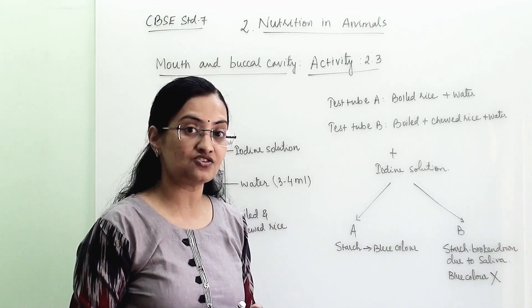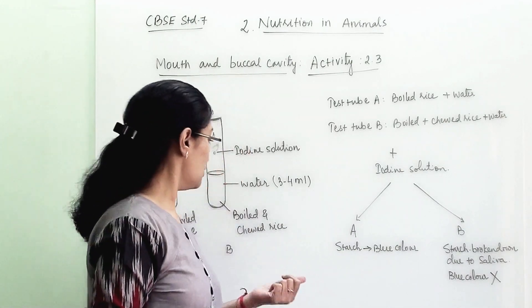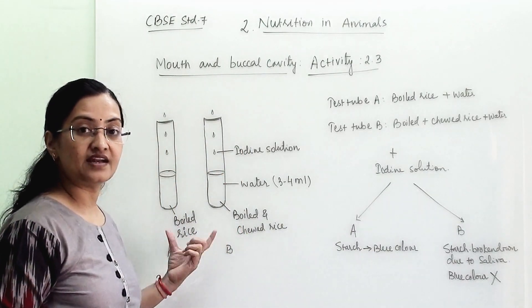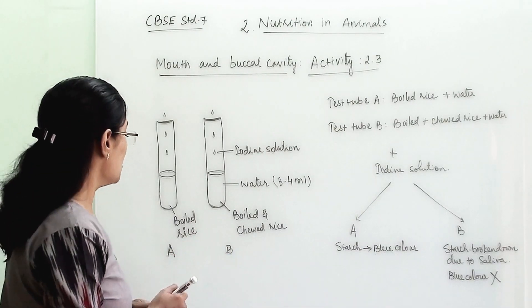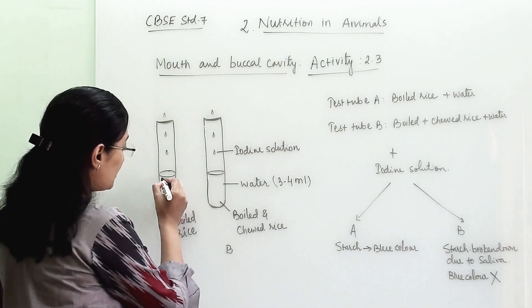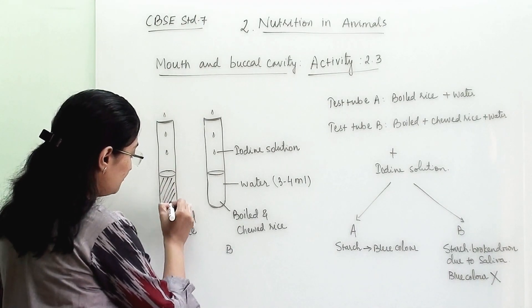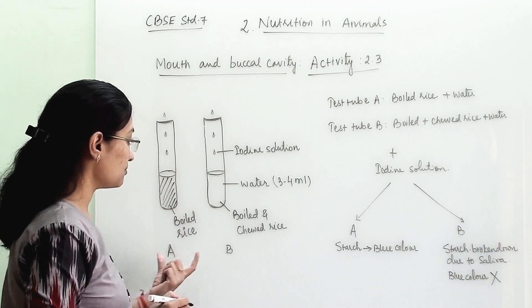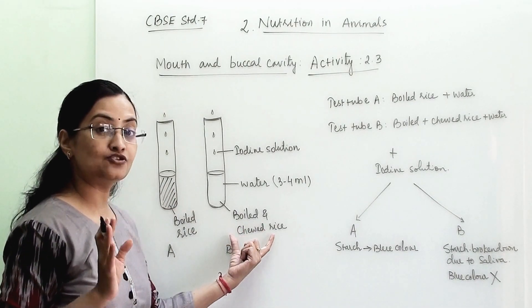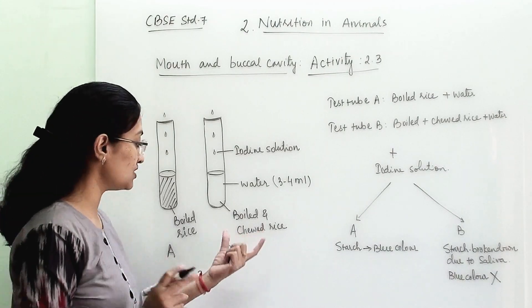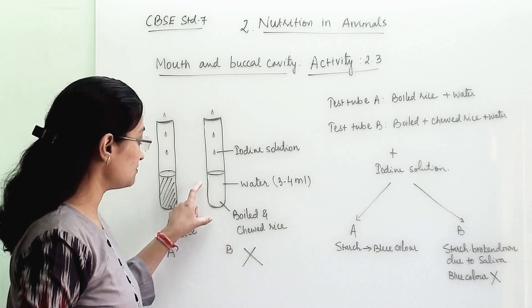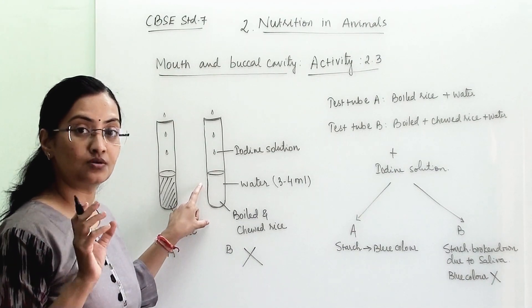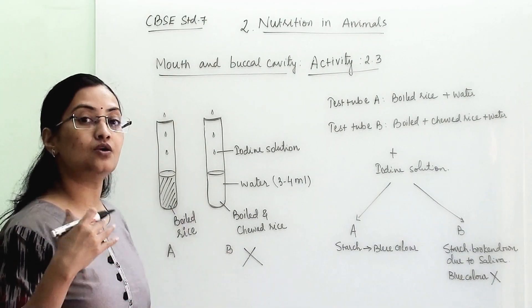Similarly, we are checking the presence of starch in boiled rice. So in both of these test tubes, we are adding 2 to 3 drops of iodine which will act as an indicator. Here, the rice which are boiled will show us blue color, but the rice which are boiled and chewed, which has saliva mixed into that, it will not show us any blue color.